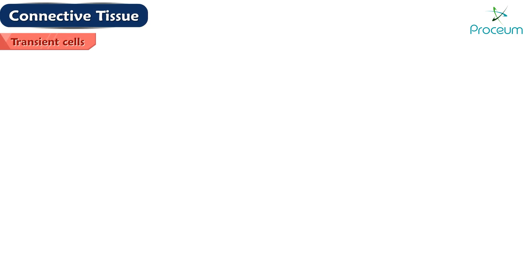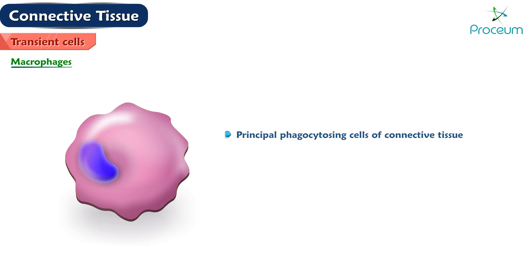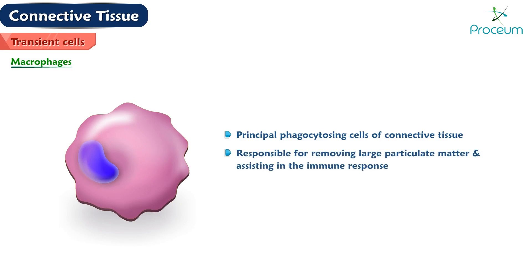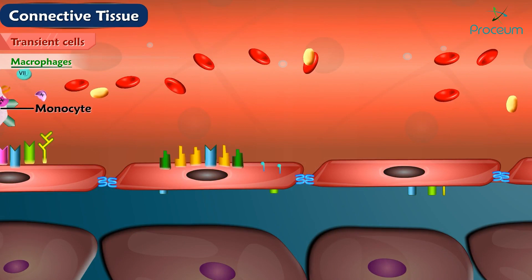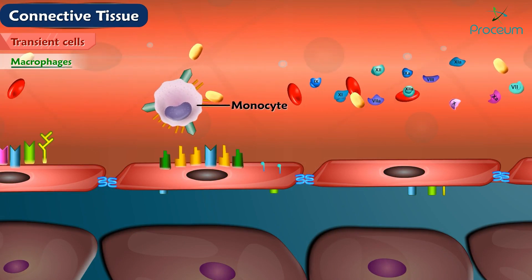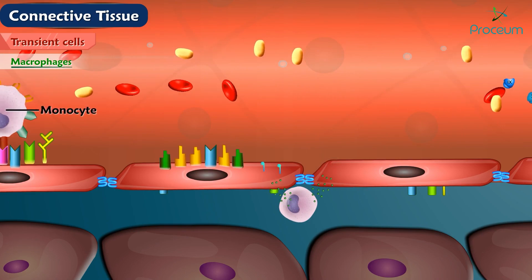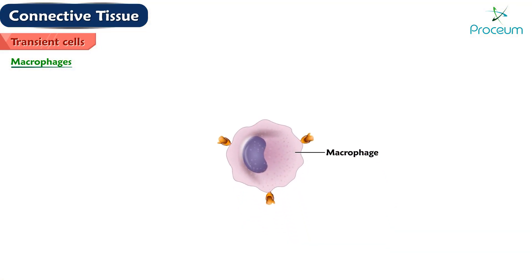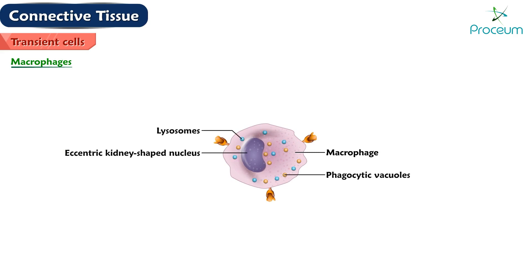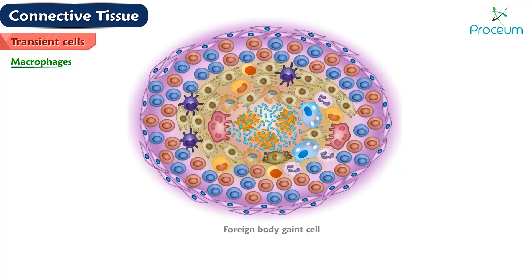Macrophages are the principal phagocytosing cells of connective tissue. They are responsible for removing large particulate matter and assisting in the immune response, and they also secrete substances that function in wound healing. Macrophages originate in the bone marrow as monocytes, circulate in the bloodstream, and then migrate into the connective tissue where they mature. When activated, they display philopodia, an eccentric kidney-shaped nucleus, phagocytic vacuoles, lysosomes and residual bodies. When stimulated, they may fuse to form foreign body giant cells, which surround and phagocytose large foreign bodies.